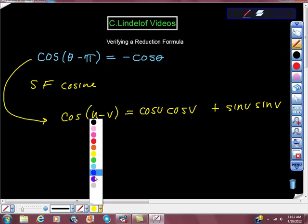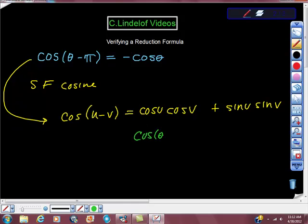So all I'm going to do is fill in the blanks here, and we're going to say cosine theta, which is certainly cosine theta, times cosine of v. V is pi, so cosine of pi is negative 1, isn't it?